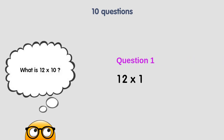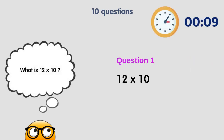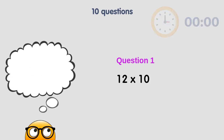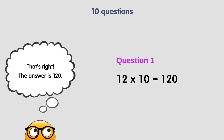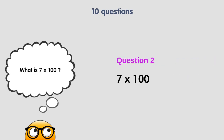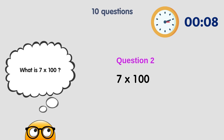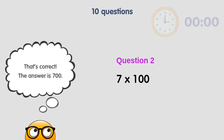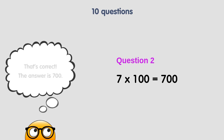What is 12 times 10? That's right. The answer is 120. Adding a zero at the end of 12, we get 120. What is 7 times 100? That's correct. The answer is 700. Adding two zeros at the end of 7, we get 700.